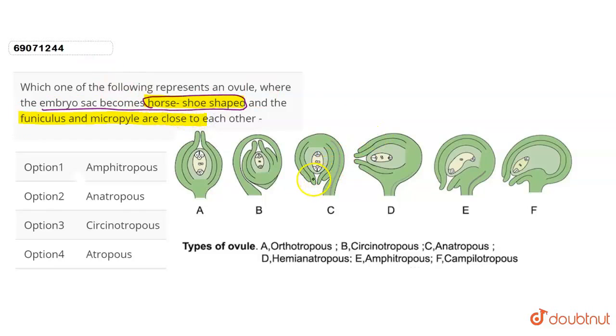Now, in the figure, we have different types of ovule, in which this particular part represents the micropyle. This is the part which is known as the embryo sac. We will label the parts which are necessary for our question. And the stalk will represent the funiculus.